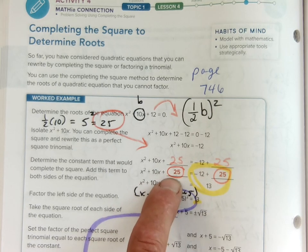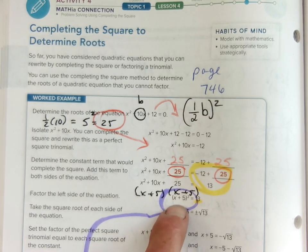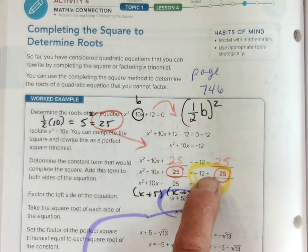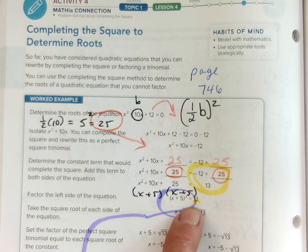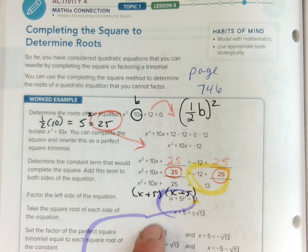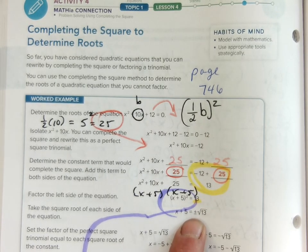That'll factor into x plus 5, x plus 5, which is an x plus 5 quantity squared. Now I combine these two terms and got a 13. Now I got x plus 5 quantity squared equals 13. So I solve. I took the square root of both sides and I got plus minus square root of 13. So then I got two equations.